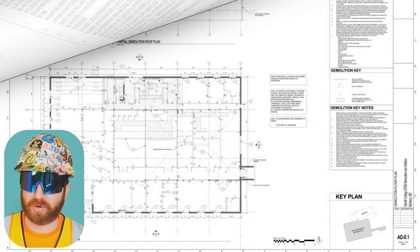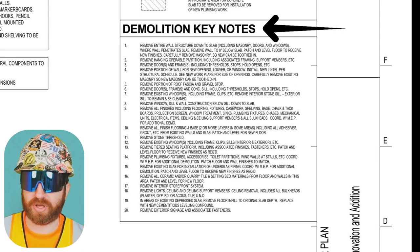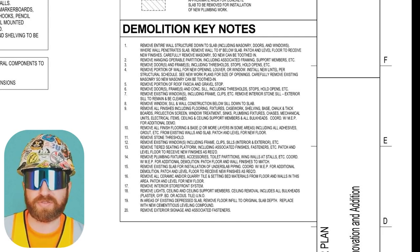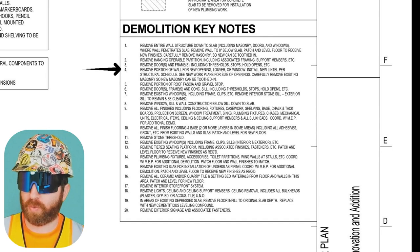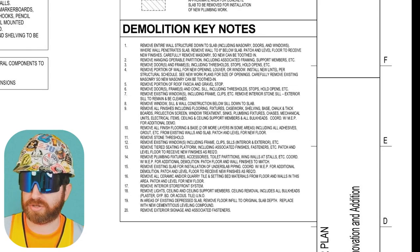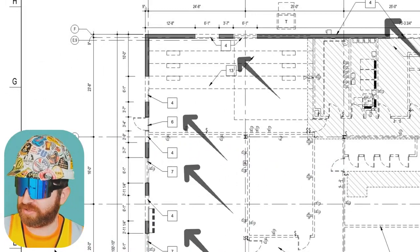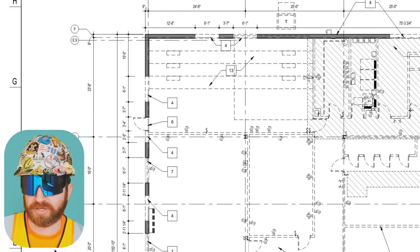I'm going to jump to AD0.1 to show you another type of note — a key note. The key note differs from the general notes because you'll find a number associated on the detail that relates back to this key note. The general notes are applicable to all drawings; the key notes have specific callouts you can find on the drawing. Looking at note number four: 'Remove portion of wall for new opening, louver, or window. Install new lintel per structural schedule. See new work plans for size of openings. Carefully remove existing masonry so new masonry can be toothed in.' We jump from the key note section to the actual detail and find this note in multiple locations.